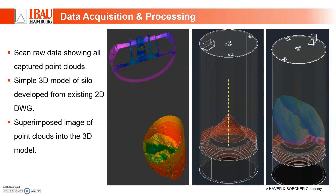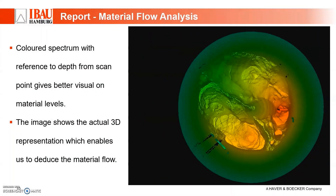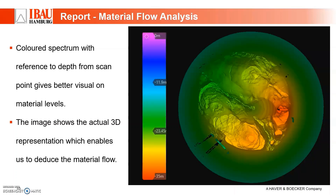Now for the final phase — analysis and report. This is the plan view of the silo internal, showing the remaining material. If you take a photo from the silo top, all you see is a 2D image with no depth reference — a gray material in a 2D plane. But with this 3D view and color spectrum which resembles depth in meters, you can easily differentiate the material layers and deduce the direction of material flow.